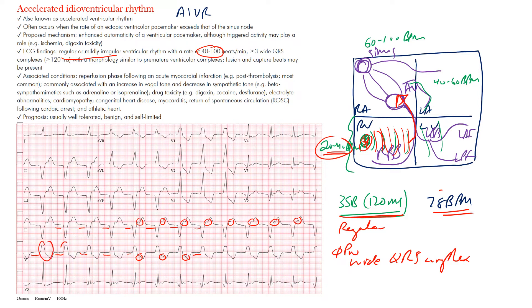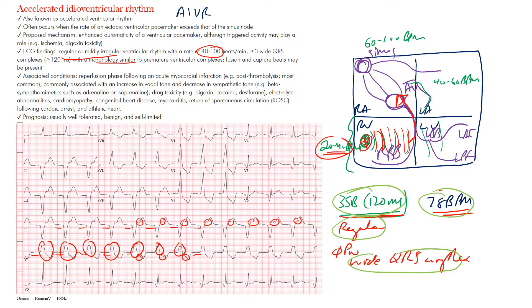To define AIVR, you need at least three wide QRS complexes with similar morphology. You may also see fusion beats or capture beats, though these are more characteristic of ventricular tachycardia and help differentiate it from supraventricular wide complex tachycardia — which we'll cover in another lecture.